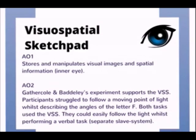For AO2, we can look at supporting evidence from Gathercole and Baddeley. They found that participants struggled to follow a moving point of light whilst at the same time describing the angles of a hollow letter F. This was difficult because both tasks used the visuospatial sketchpad, and so the system was overworked. However, participants could easily follow the light whilst performing a verbal task, as this used a separate slave system.